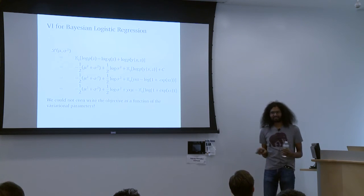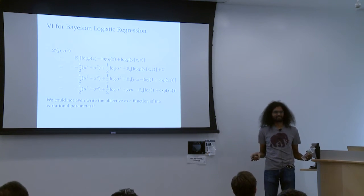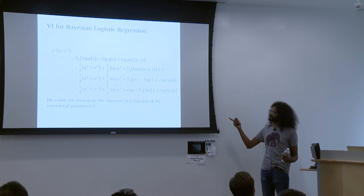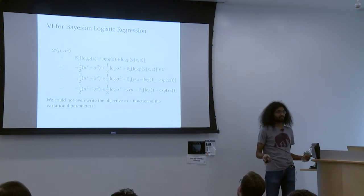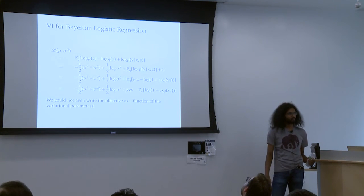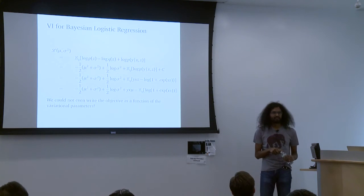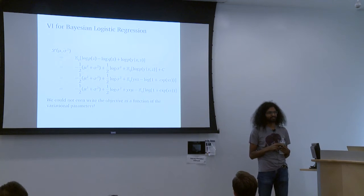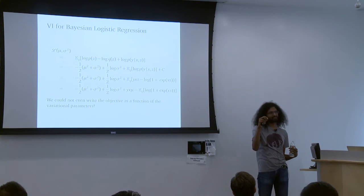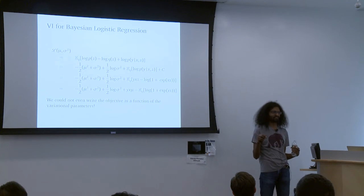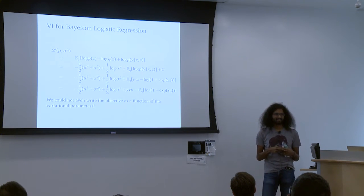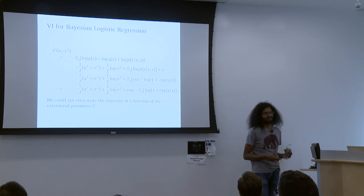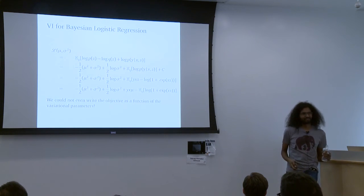One way to get around this is to use stochastic optimization — don't compute the objective exactly; use noisy, unbiased gradients instead. By passing the derivative inside the integral, we get the gradient of the ELBO as an expectation. We can get a noisy unbiased gradient by drawing samples from Q and computing a Monte Carlo estimate. What we need: ability to sample from Q, the score function of Q (derivative of log density), and knowledge of the model and approximation density. This is a black-box approach requiring no model-specific computation.